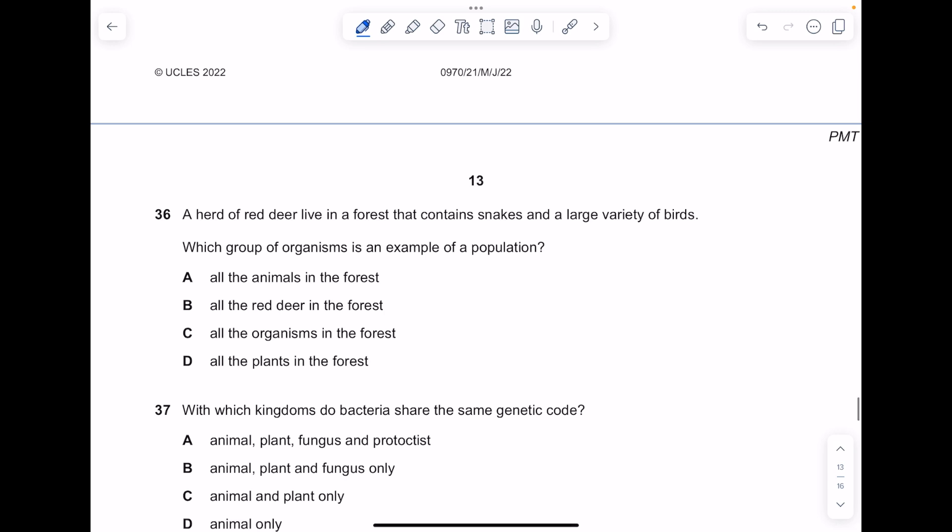A herd of red deer live in a forest that contains snakes and a large variety of birds. Which group of organism is an example of a population? Remember this is all members belonging to the same species, so definitely not all the animals. The red deer, yes.